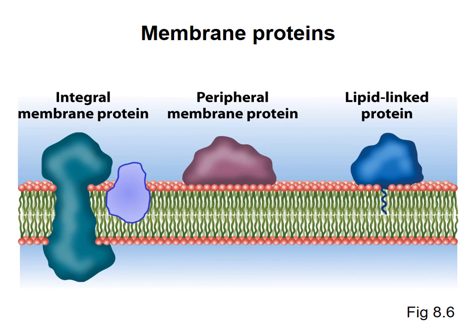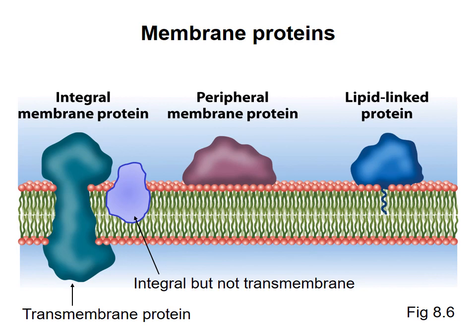Proteins associate with the membrane in three ways. In integral membrane proteins, one or more regions of the polypeptide chain are embedded in the lipid bilayer, making contact with the hydrophobic interior of the membrane. Most commonly, the polypeptide chain of an integral membrane protein completely crosses the membrane at least once, such that part of the protein is exposed to the aqueous compartment on one side, and another part is exposed to the other side. This kind of protein is called a transmembrane protein. A small number of integral membrane proteins are embedded in the membrane but don't cross all the way to the other side.